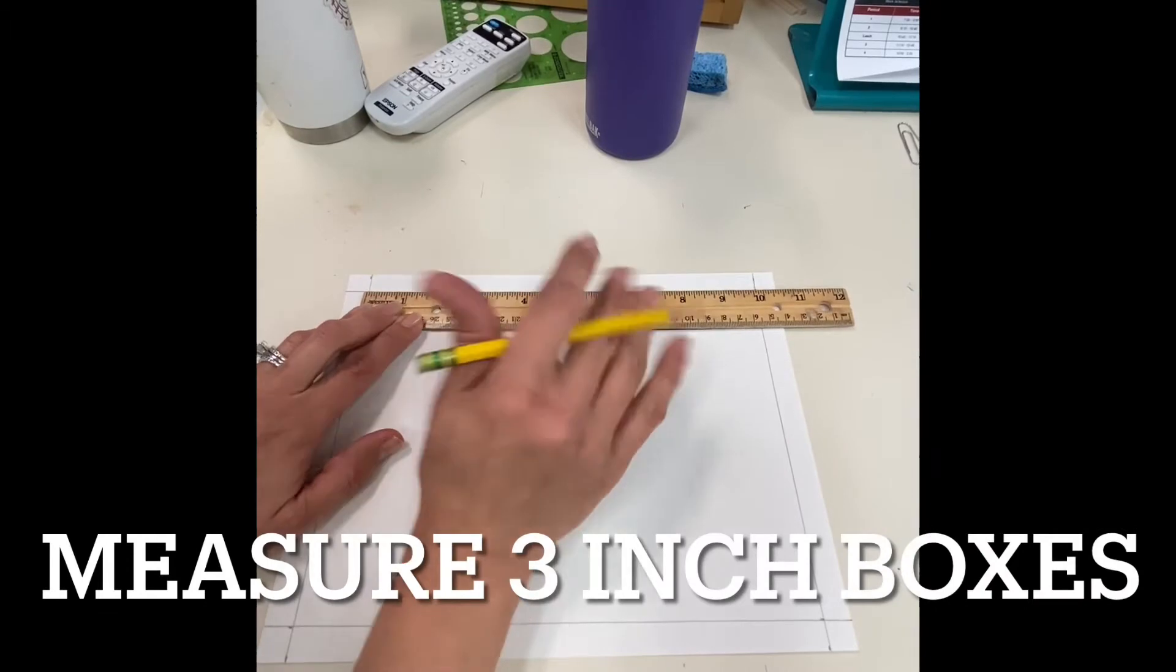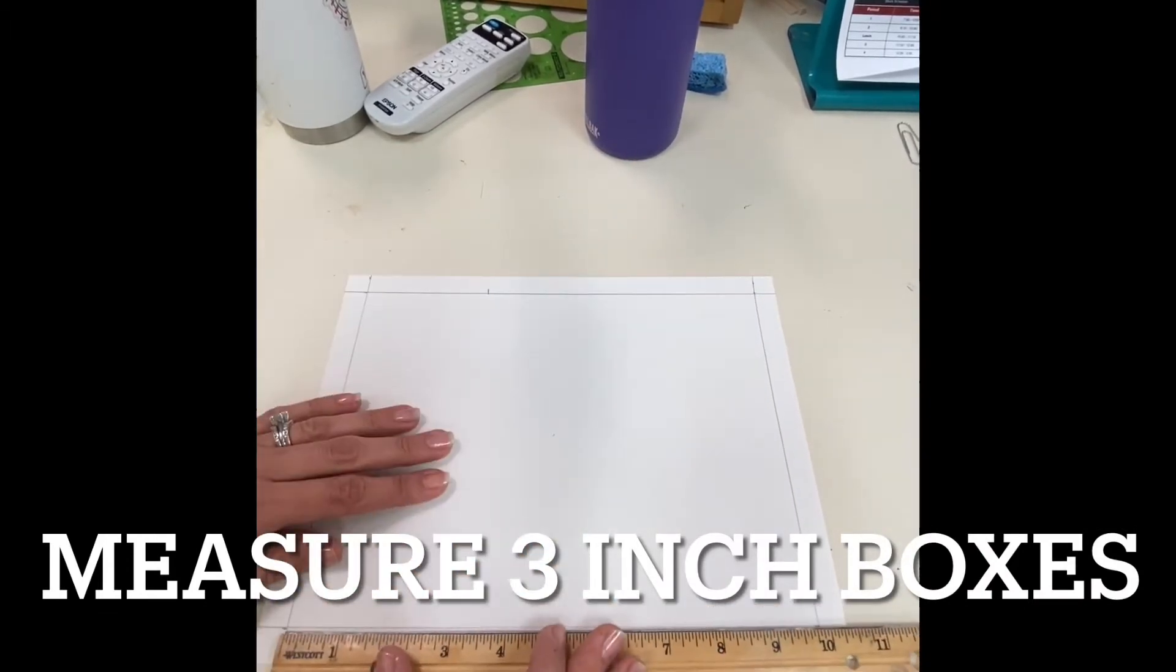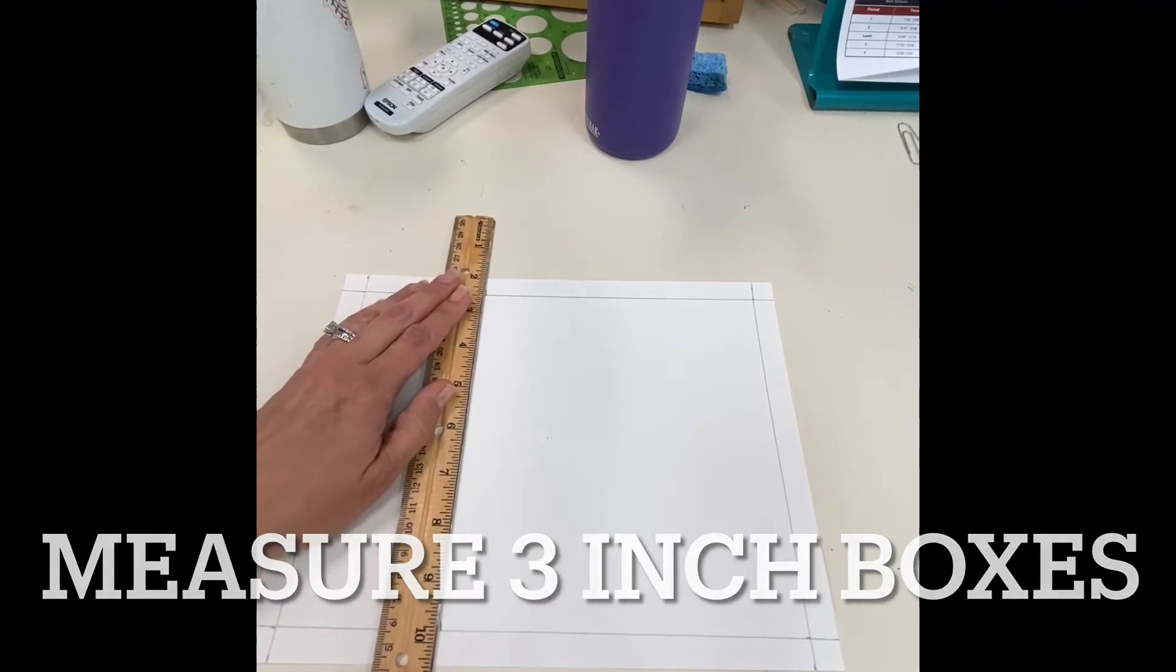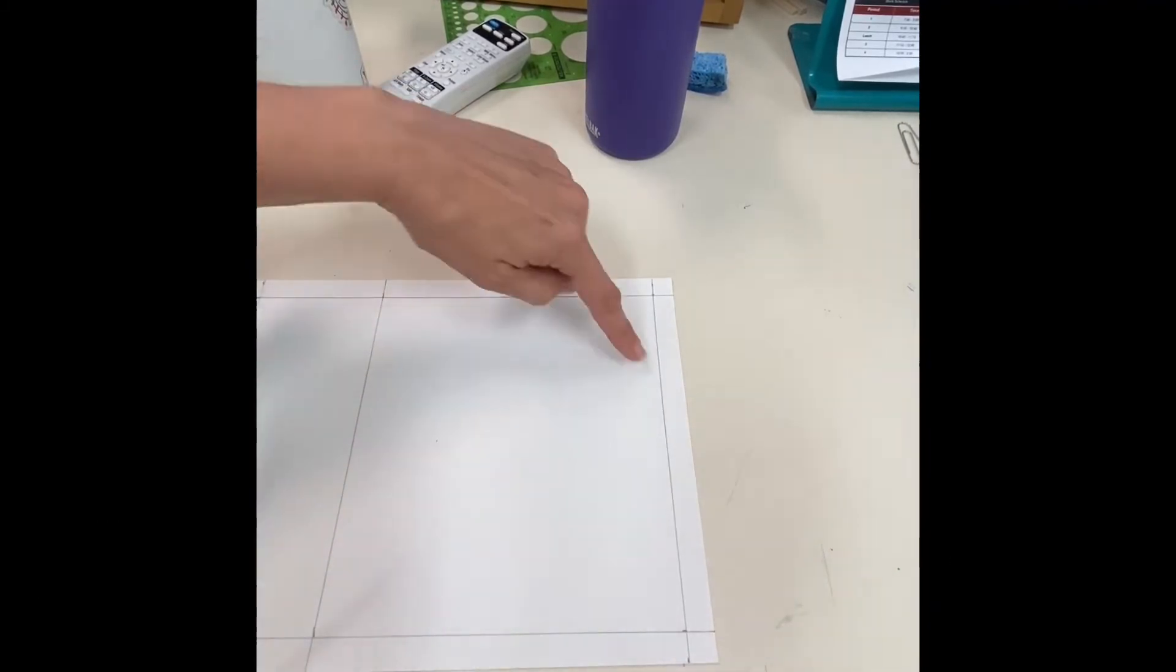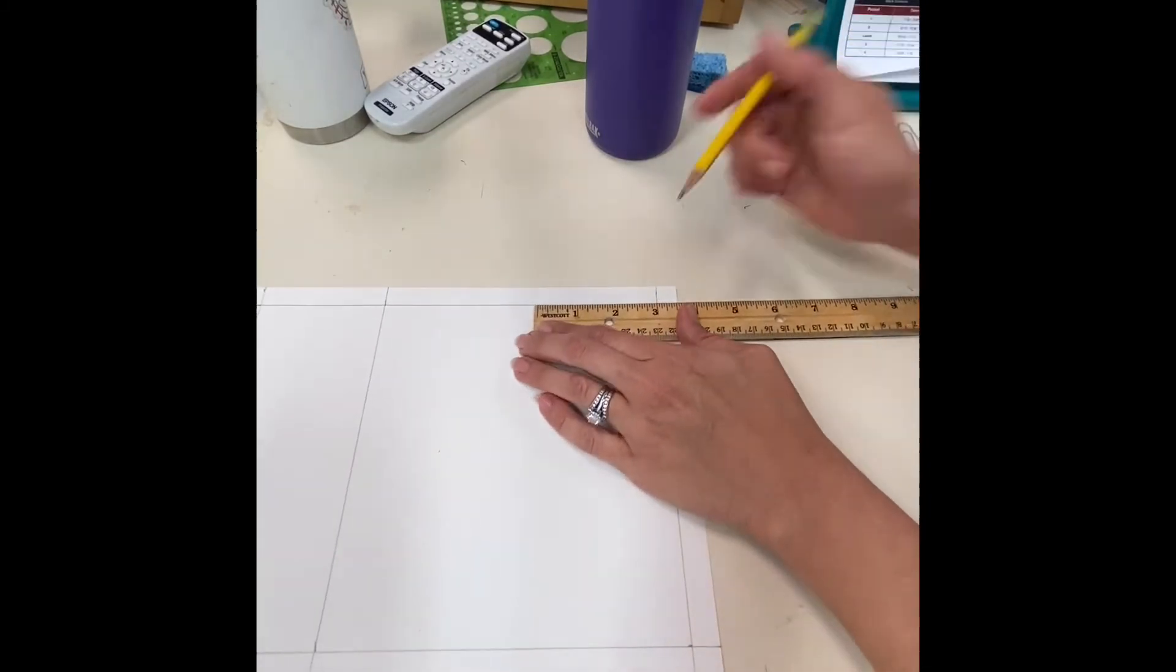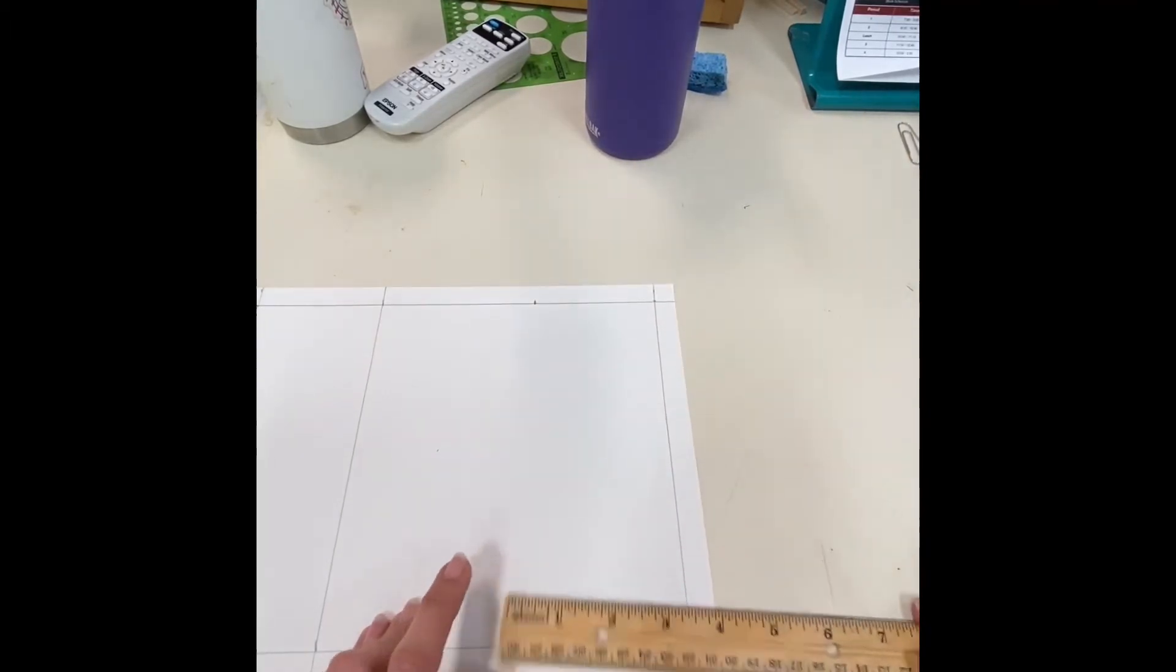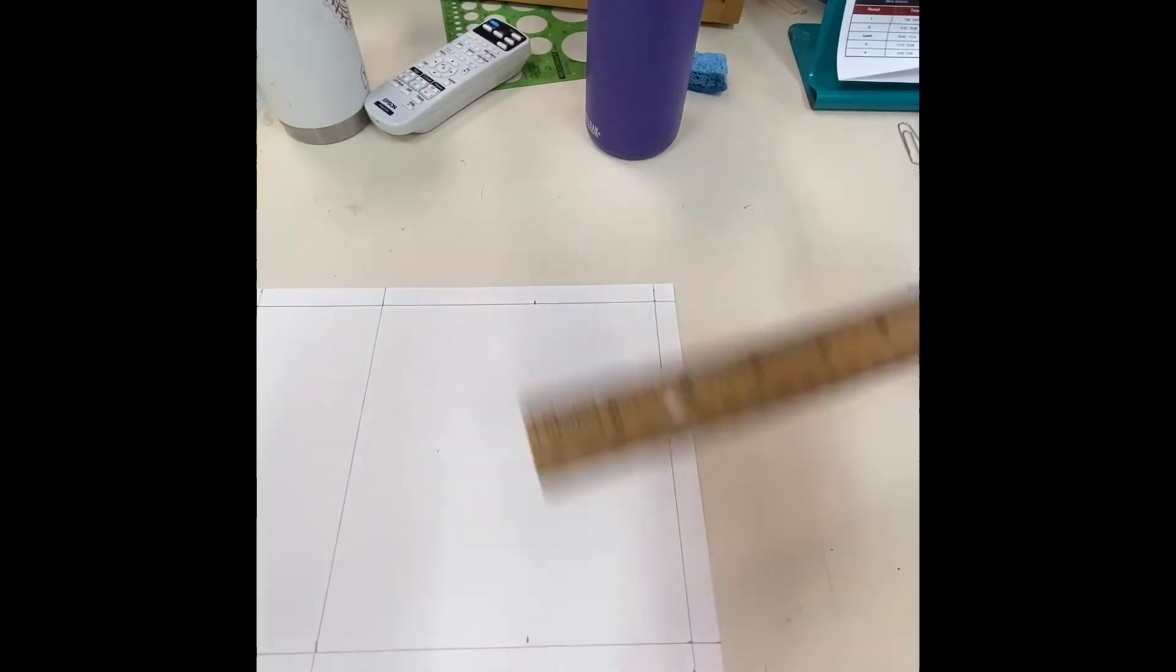Next, place your ruler on the left side of the paper and mark three inches at the top. Next, measure three inches again on the right side of the paper and mark the top and the bottom, and then go ahead and connect your lines.